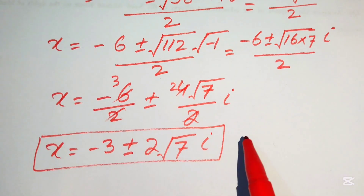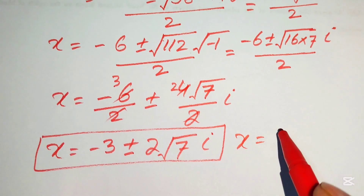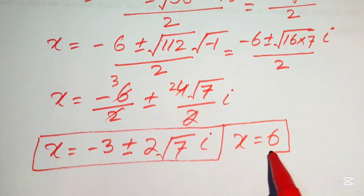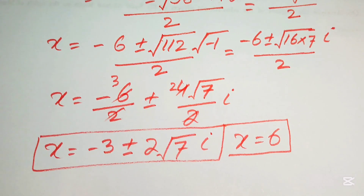So the final answers are: x equals 6 as the one real solution, and x equals minus 3 plus or minus 2√7·i as the two complex roots. Thank you so much for watching. Please subscribe to my channel for more exciting videos.